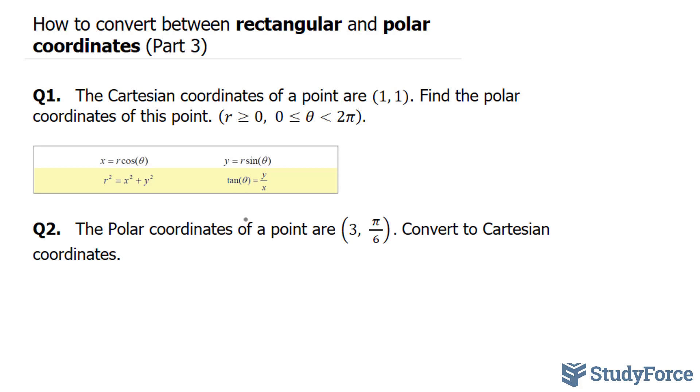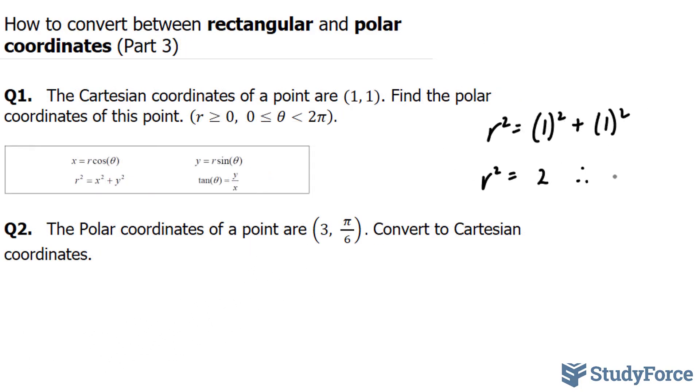Let's start by finding the radius. What I'll do is substitute this one and this one into x and y respectively. I end up with r squared is equal to 1 to the power of 2 plus 1 to the power of 2. This gives me r squared is equal to 1 plus 1 is 2. Therefore, r is equal to root 2. I just found the radius.